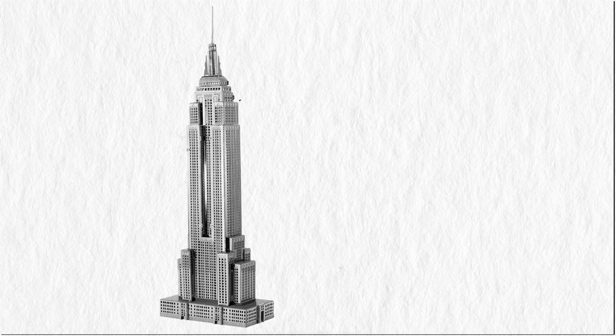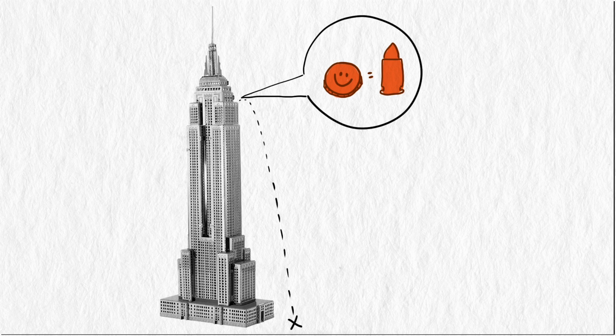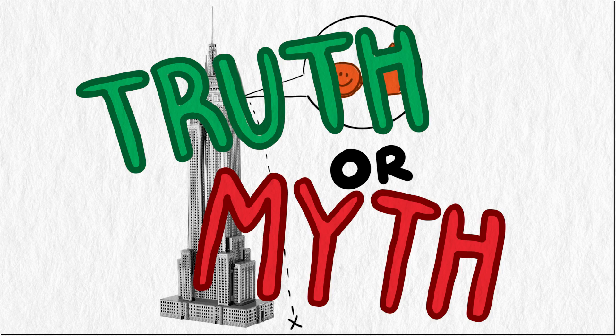Have you ever heard someone say that throwing a penny off the Empire State Building would kill someone below on the street? The idea here is that since the Empire State Building is so tall, that even something as small as a penny could reach such great speeds it would essentially turn into a bullet and kill someone if hit in the right location. Let's investigate this statement and see if it's truth or myth.